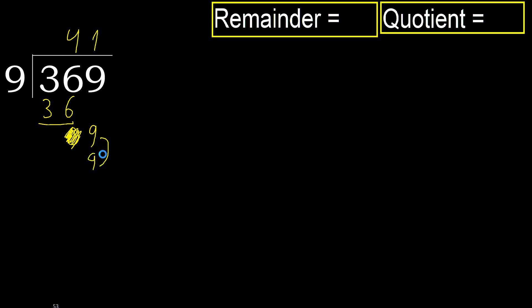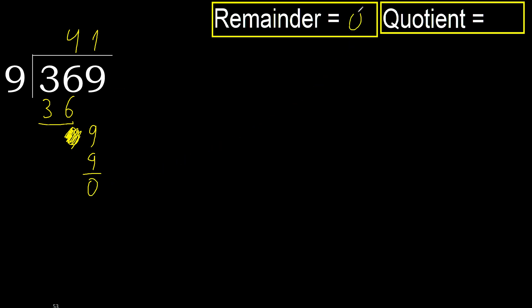9 multiplied by 1 is 9. It is not greater. Ok. Subtract. Next — that is not a number, therefore finish it. Ok. 369 divided by 9 is 41.